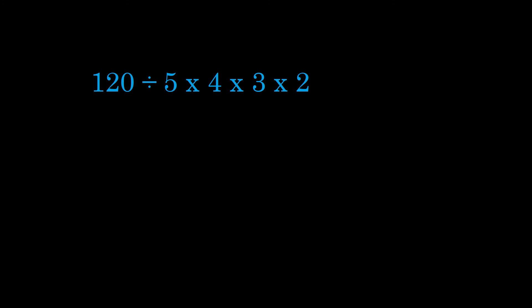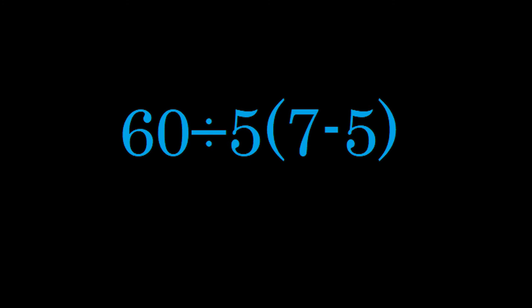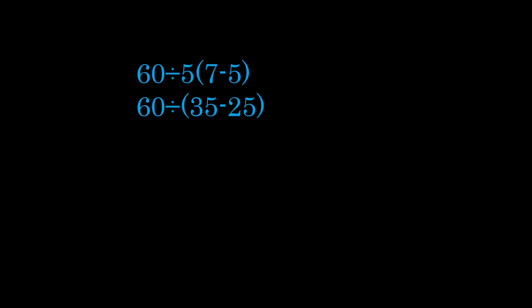Just because 5 factorial can be replaced by a sequence of multiplied numbers does not mean you can pry off the first of the series and use it as if it's not part of the whole factorial. In the same way, look at the original equation that caused so much trouble: 60 ÷ 5(7 − 5). The 5 is distributed through the 7 minus 5 — you cannot simply pry it off and attach it to the division. It is fundamental to the entire term within the parentheses. You have to distribute the 5 back through the parentheses first: 60 ÷ (35 − 25), which becomes 60 ÷ 10, which is 6. The answer here is unequivocal: 6.